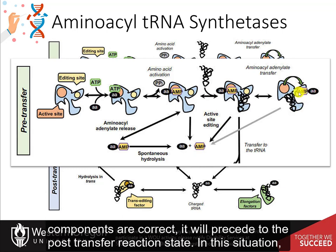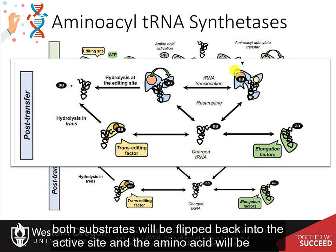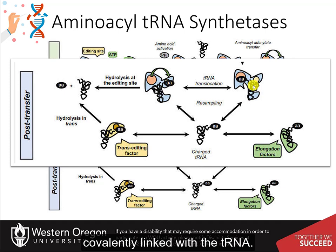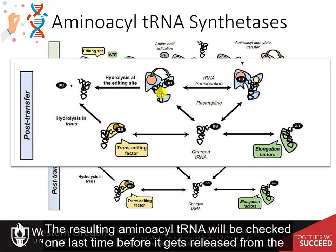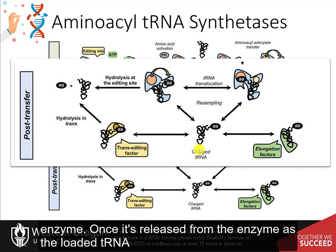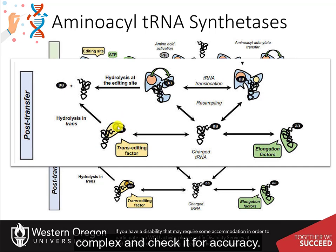If both components are correct, it will proceed to the post-transfer reaction state. In this situation, both substrates will be flipped back into the active site, and the amino acid will be covalently linked with the transfer RNA. The molecule of AMP will leave the reaction. The resulting aminoacyl tRNA will be checked one last time before it gets released from the enzyme. Once it is released from the enzyme as the loaded transfer RNA, there are trans-acting factors — other proteins — that will also bind to this tRNA-amino acid complex and check it for accuracy.